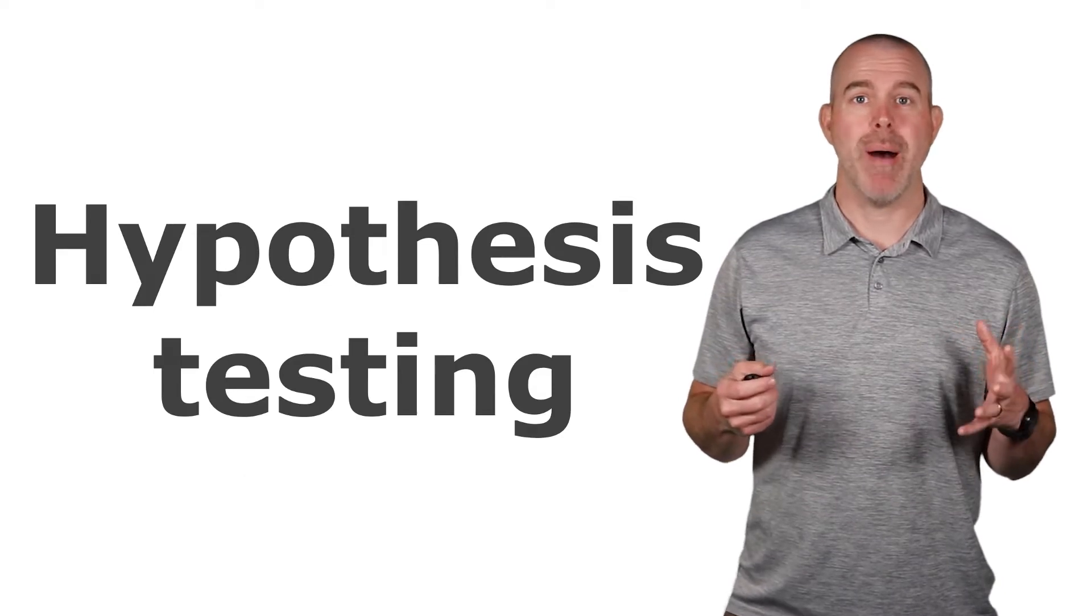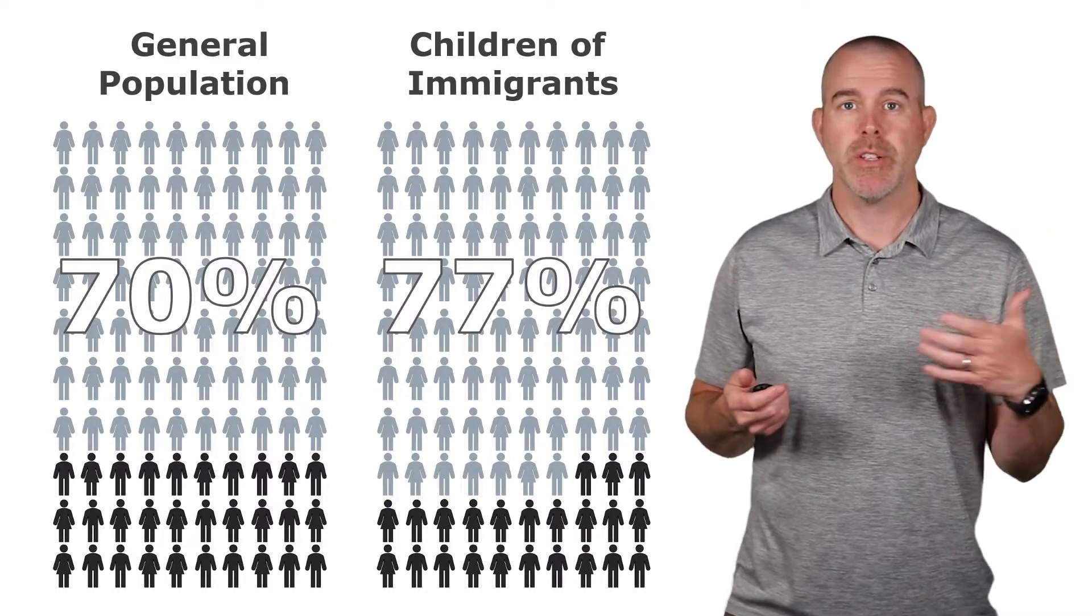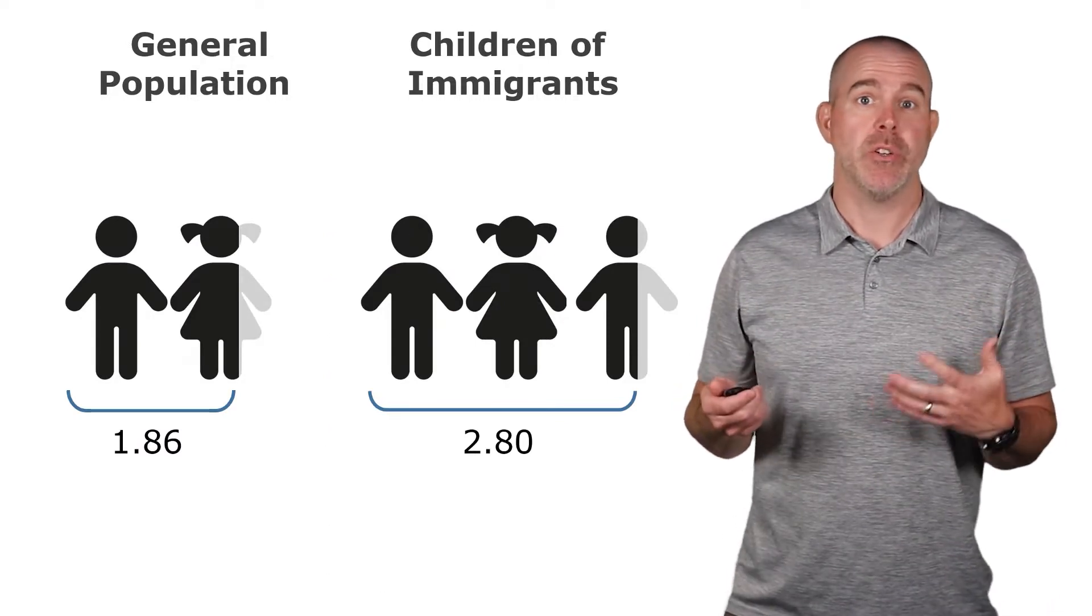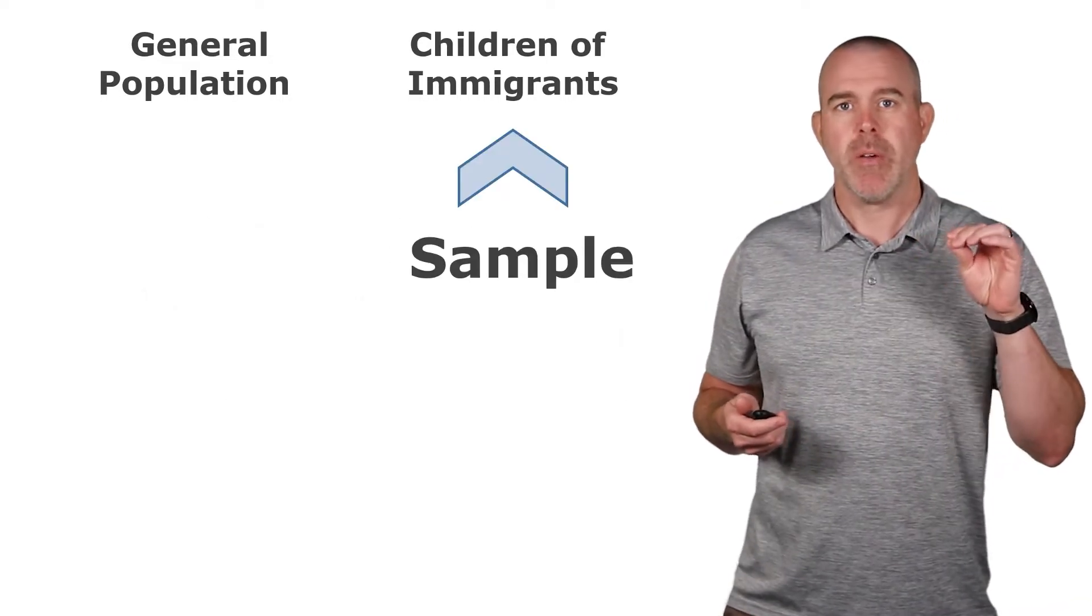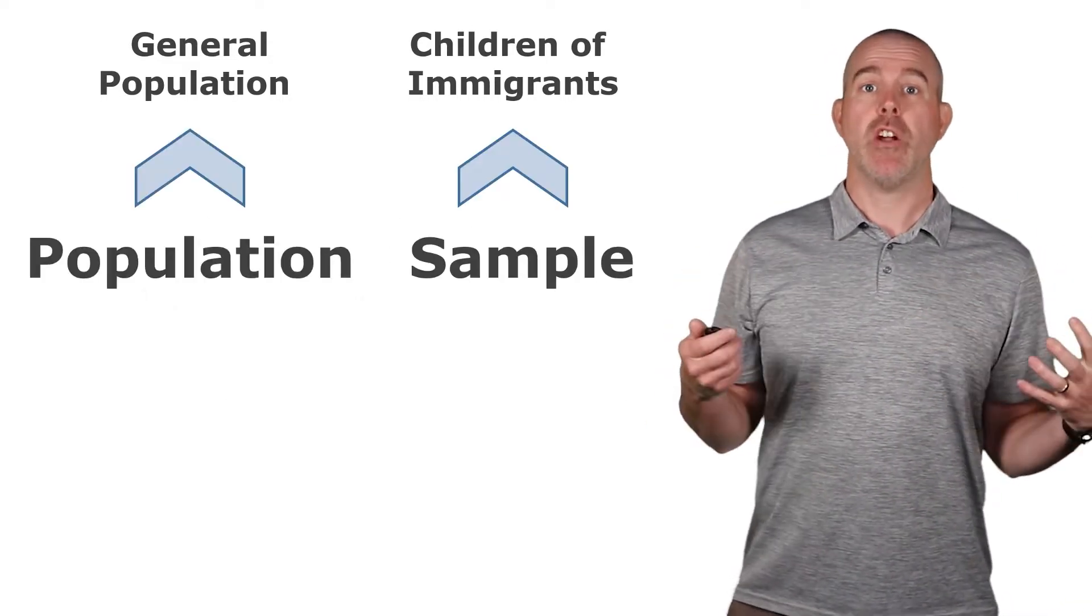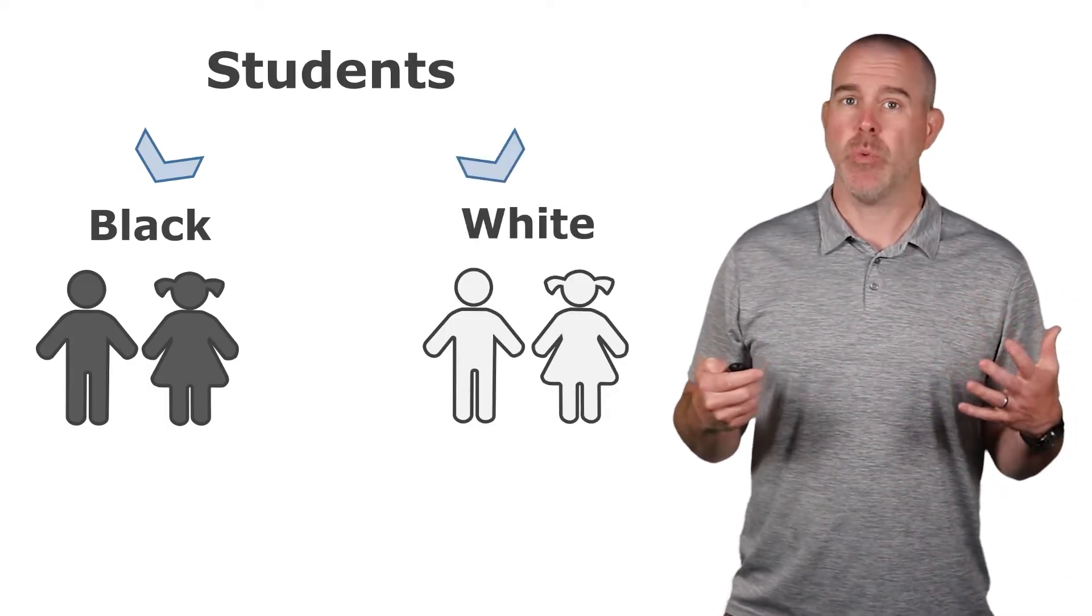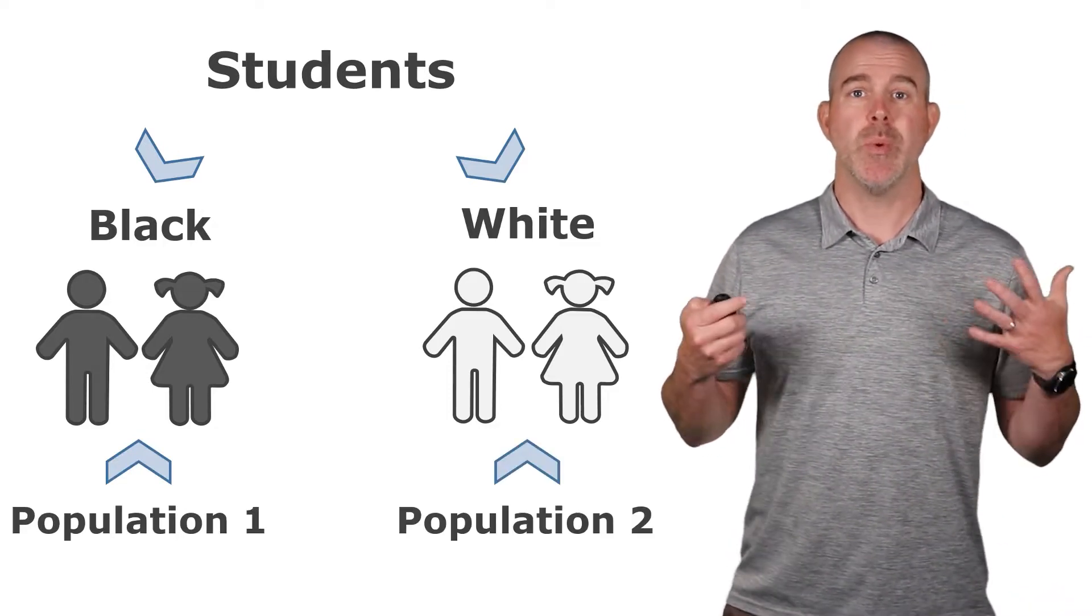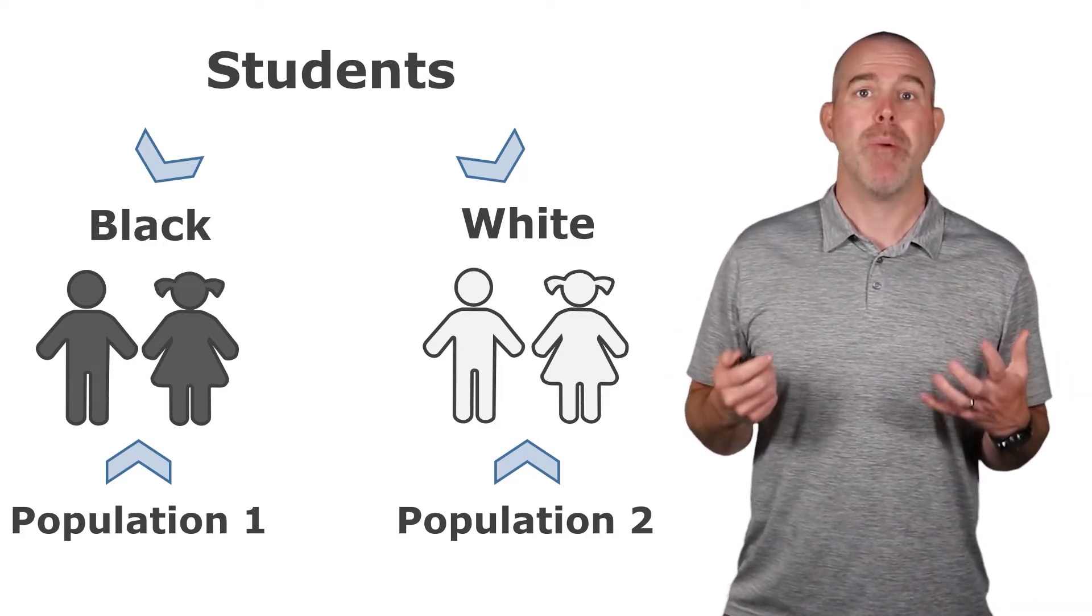We've had a variety of videos already about hypothesis testing where we compared the children of immigrants and the proportion that were registered to vote compared to the general population, or family size in the children of immigrants database to the general population. But all of these we're treating that children of immigrants as a sample to the general population as a population. What if we compare discipline rates between black students and white students? In this case we're really comparing two populations, the population of black students and the population of white students. So we need some new machinery about how to compare two population proportions.